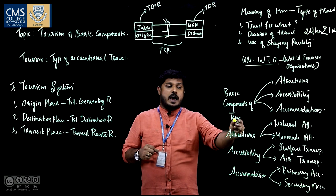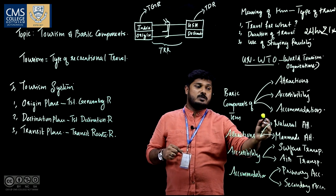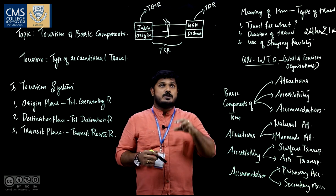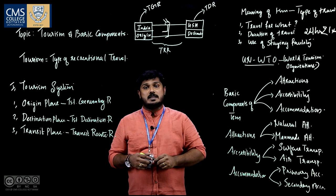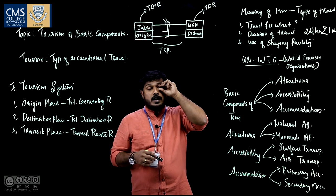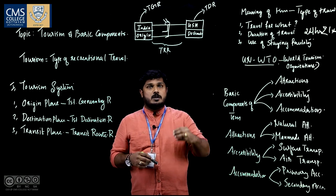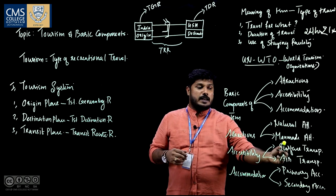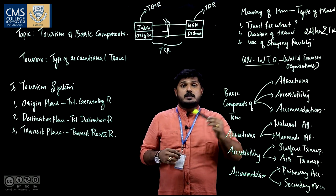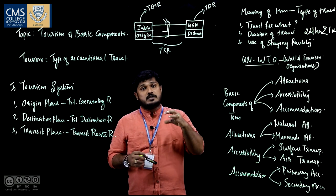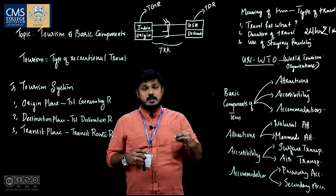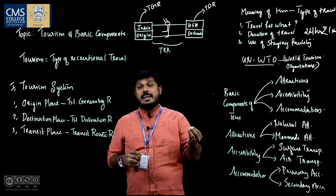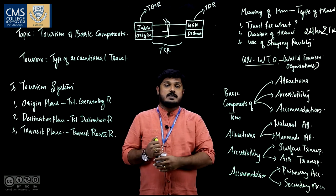Attractions are again divided into two: natural attractions and man-made attractions. If you consider one tourism destination, all the attractions can be classified into two. Natural attraction means attractions which exist in nature. For example: waterfalls, rivers, lakes, backwaters, seas, oceans, etc.